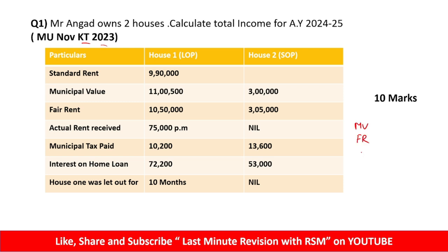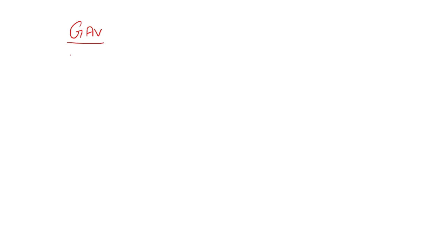In normal cases, we take three values — Municipal Value, Fair Rent, and Actual Rent — and from these we take the higher value. That higher value becomes your GAV, i.e., Gross Annual Value.